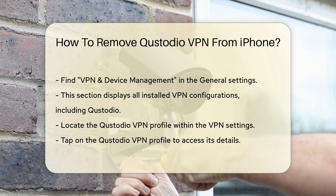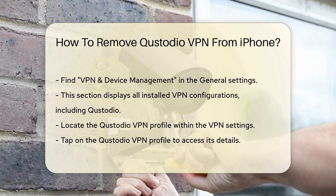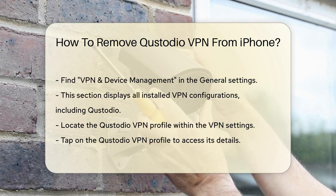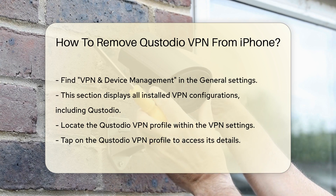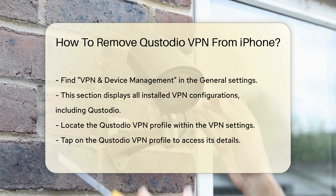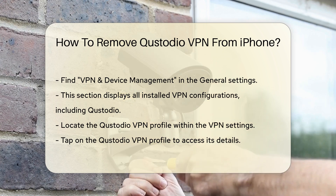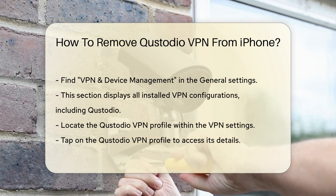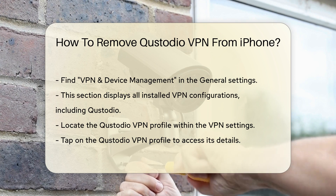Once in the VPN settings, locate the Custodio VPN profile. Tap on it to view the details. You will see an option to remove or delete the VPN configuration. Tapping this option will initiate the removal process.